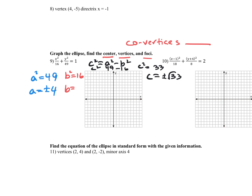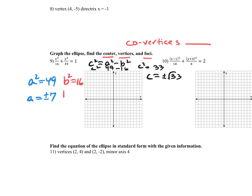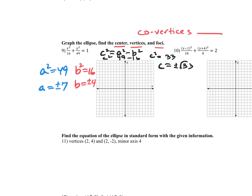Let's find our a-value — we always use a to find the vertices and b for the co-vertices. The square root of 49 is 7, and the square root of 16 is 4. This one has the center at (0, 0) — nothing is being added or subtracted from the x-squared and y-squared — so my center is (0, 0).